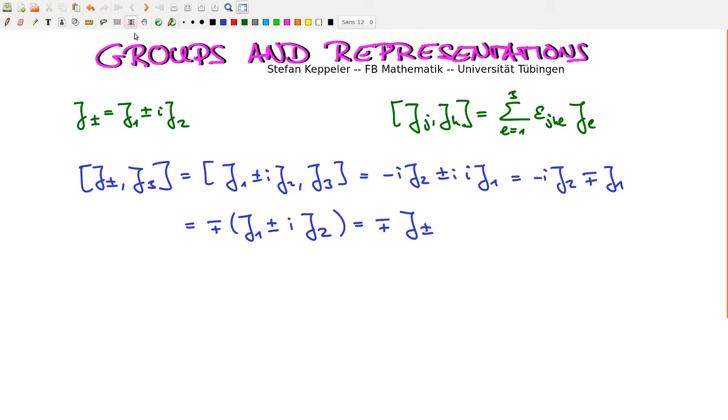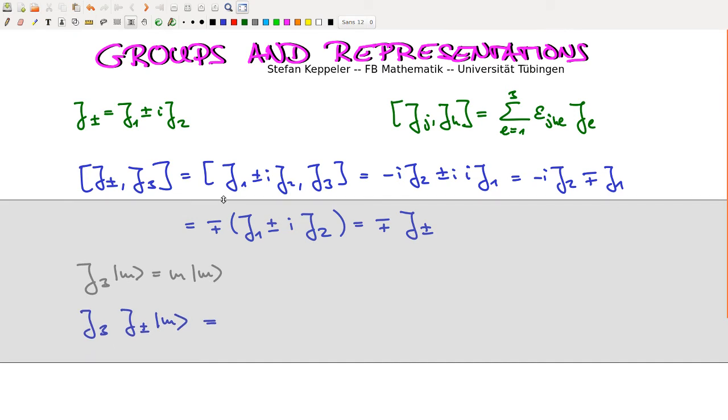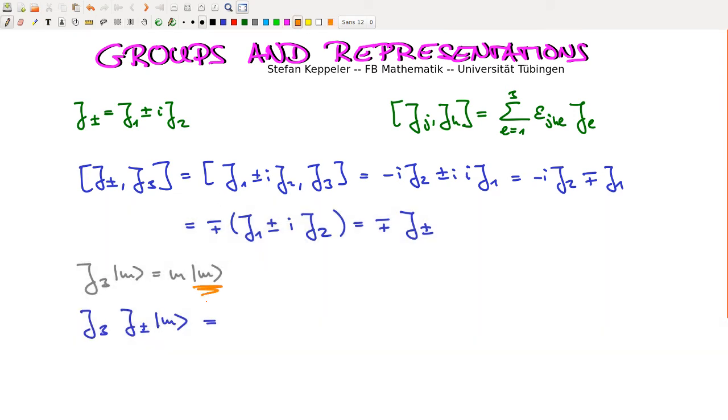And now with this, we can study the following. Let's take an eigenvector of J3 with eigenvalue M. And now apply this J plus or J minus to this eigenvector and see what happens if we multiply it with J3 again.